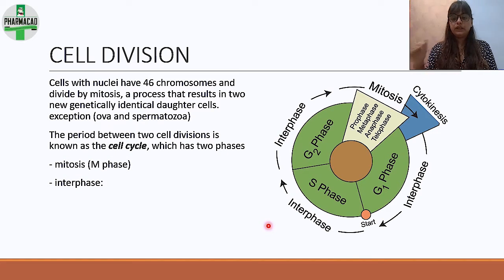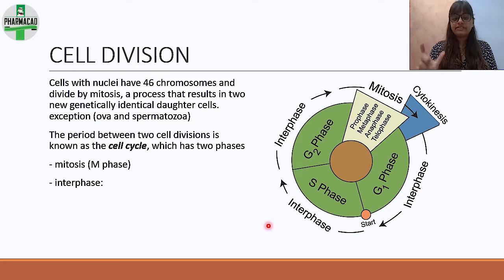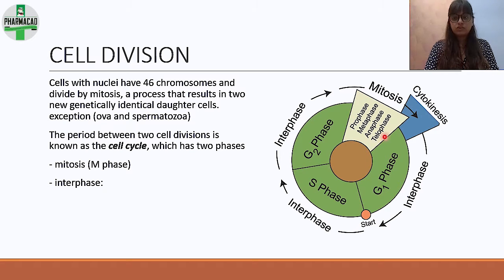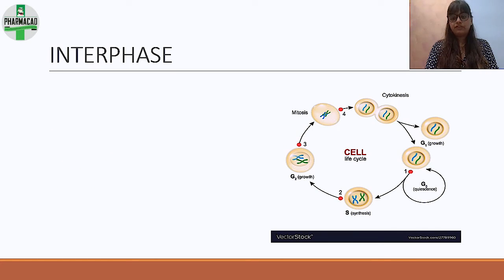The period between two cell divisions is known as the cell cycle. In each cycle there are two phases: the interphase (shown in green in the diagram) — which is the longer phase — and the M phase, which is mitosis (shown in the yellowish-white part).